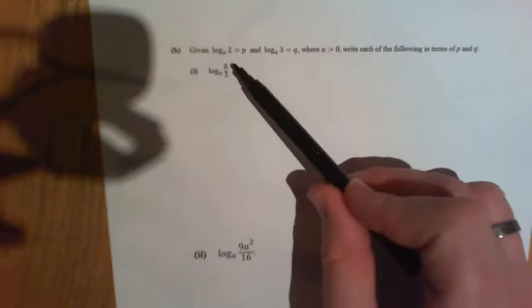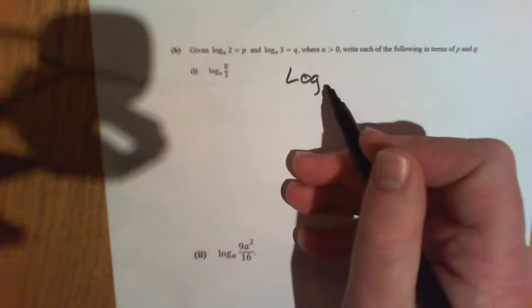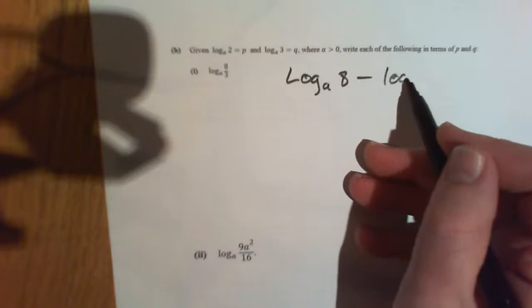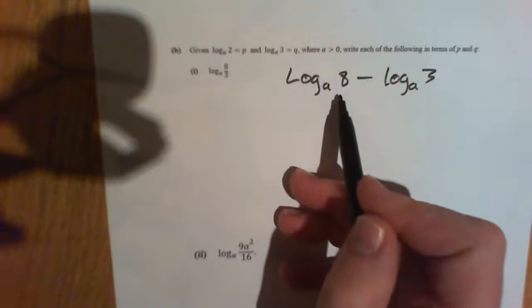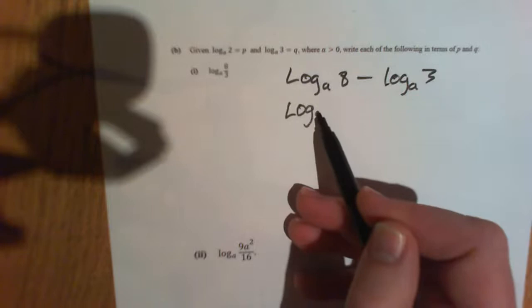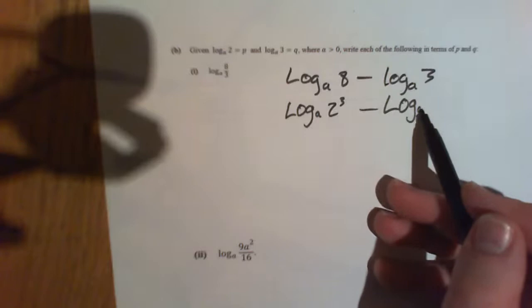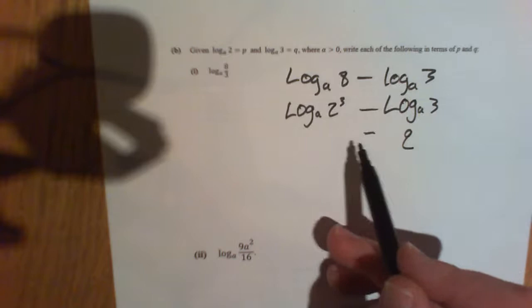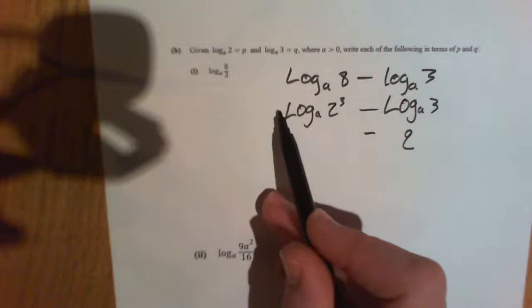The log to the base a of 8 over 3. Well, first of all, there's a log rule for this. Let's change that. So we have now log to the base a. Division is the same as a subtraction. Now, this is a power of 2.